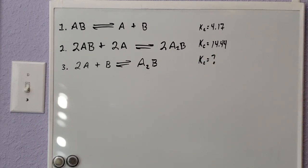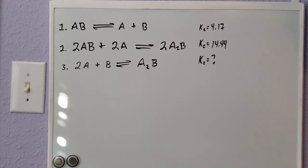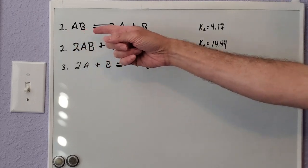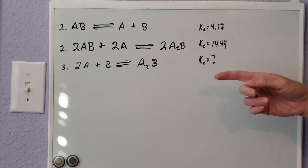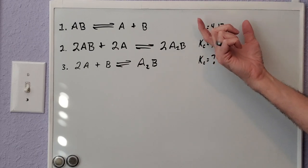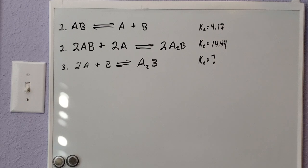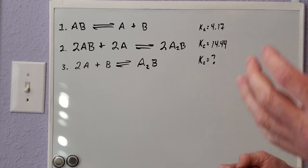You can't have a negative 4.17 when you're talking about a constant here, but you can have 1 over the 4.17. So when you reverse these directions—instead of going from AB to A + B, if you want A + B to go to AB—then you're not only going to switch the sign here, you're actually going to inverse the entire value, or by inverse I mean 1 over whatever that value is going to be.